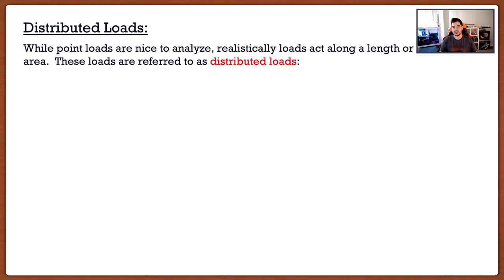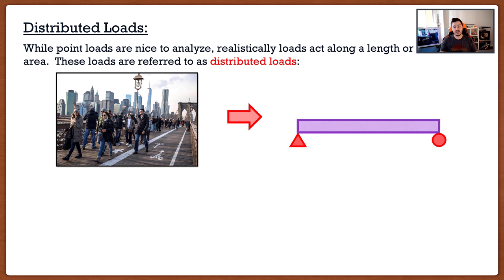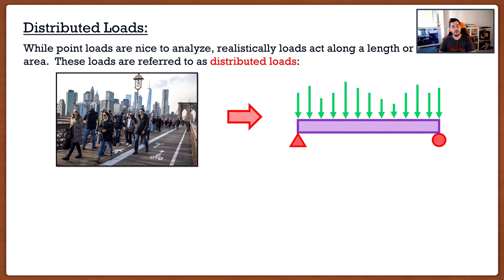Before, we've always talked about forces as single vectors — we typically call these point loads, and they do exist in real life. If one beam is on another beam, this is going to create a point load. However, there are some loads that act over a distance. The number one distributed load that we as engineers deal with is people. If we look at a bridge with a bunch of people constantly going across it, each person can be represented as a single force, but there are so many people in that area, it's actually better to analyze it as a distributed load — distributed all the way throughout the length of the beam. The question for us is, how exactly do we analyze this? If we had point loads, that's no problem, but what do we do with these distributed loads?